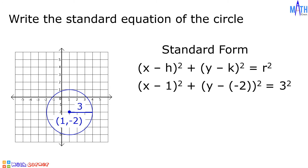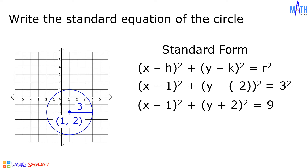Let us simplify. We have (x minus 1) squared, plus (y minus negative 2) becomes (y plus 2) squared, equals 3 squared, or 3 times 3, which is equal to 9. And the standard equation of the circle centered at (1, negative 2) with radius equal to 3 is (x minus 1) squared plus (y plus 2) squared is equal to 9.